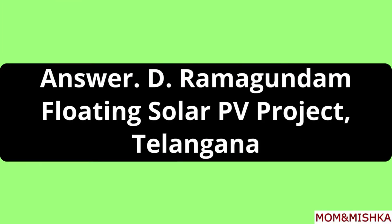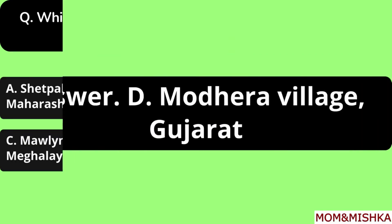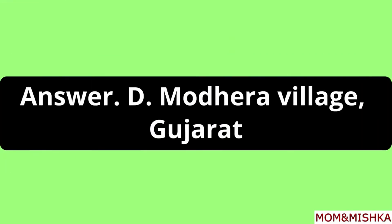Which of the following is India's largest floating solar power project and where is it located? It is the Ramagundam Floating Solar PV Project in Telangana, Option D. Which of the following is the first 24x7 solar powered village in India? Smodhera village of Gujarat, Option D.